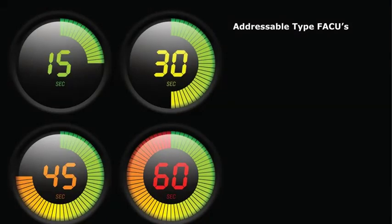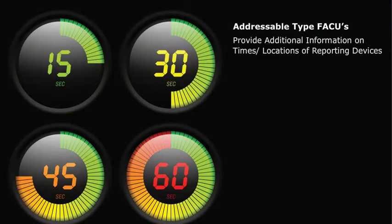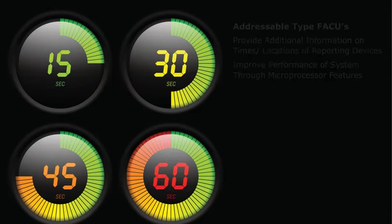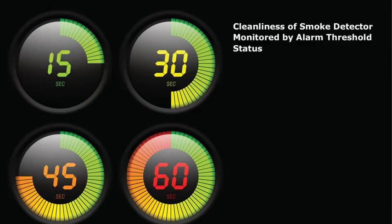Addressable type FACUs provide additional information to the building owner, such as the times and locations of reporting devices. Addressable or analog FACUs improve the performance of the system through microprocessor features that will report exact locations of devices that are reporting, as well as alarm threshold status. Alarm threshold status will monitor the cleanliness of a smoke detector to determine maintenance status and attempt to avoid unnecessary alarms.